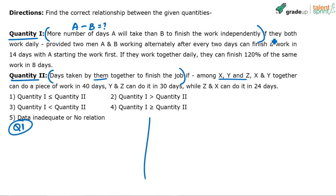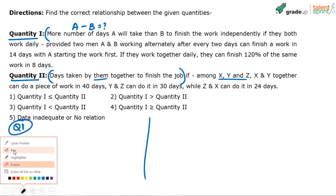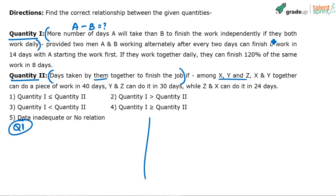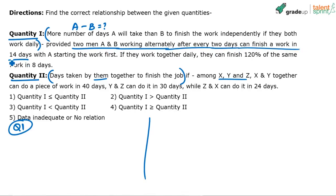For quantity one, there are two men A and B working alternately after every two days. They can finish the work in 14 days with A starting the work first. If they work together daily, they can finish 120 percent of the same work in eight days.